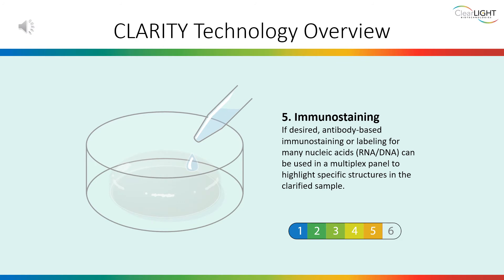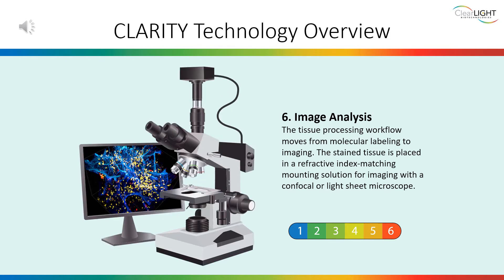After lipid clearing, the sample is primed for immunostaining if desired. Antibody-based immunostaining or labeling for many nucleic acids — RNA or DNA — can be used in a multiplex panel to highlight specific structures in the lipid-cleared sample. Finally, the tissue processing workflow moves from molecular labeling to imaging. The stained tissue is placed in a refractive index-matching mounting solution for imaging with a confocal or light sheet microscope or another imaging platform.